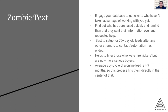This is best to use on leads who are 75 days or older — not years, 75 days — to remind them that they requested help, remind them that you exist and that you're there to help them. The average buy cycle of an online lead is four to nine months, so what this does is allows you to hit them right in the middle of that cycle.